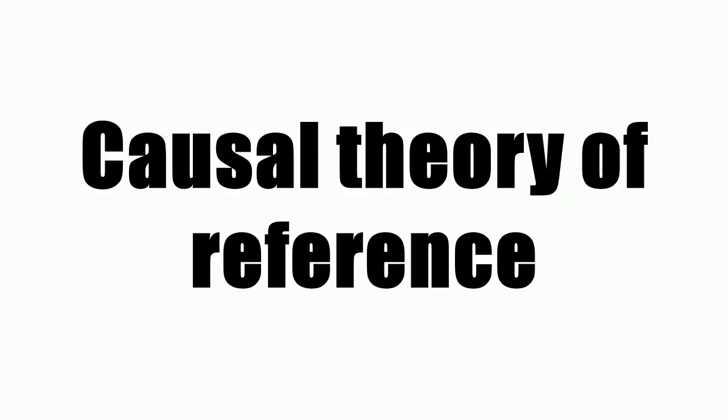The links between different users of the name are particularly obscure. Each user must somehow pass the name on to the next and must somehow mean the right individual as they do so. Kripke himself notes the difficulty. John Searle makes much of it.